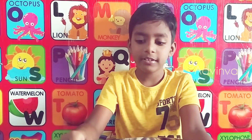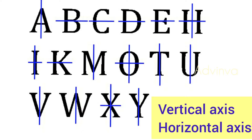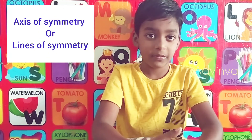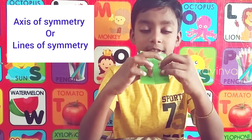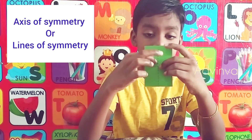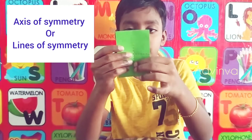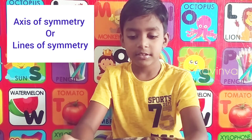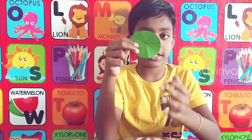For alphabet letters, like A or B — A can be cut with a vertical line and B can be cut horizontally. These are called the axis of symmetry or lines of symmetry. We can say it both ways — this is the axis of symmetry, or the line of symmetry.